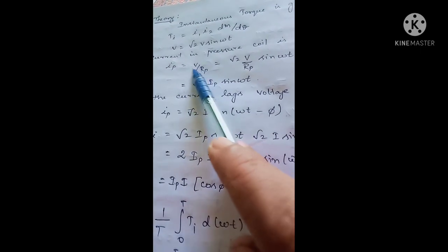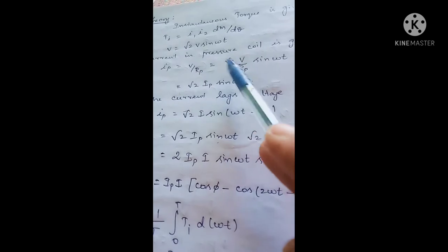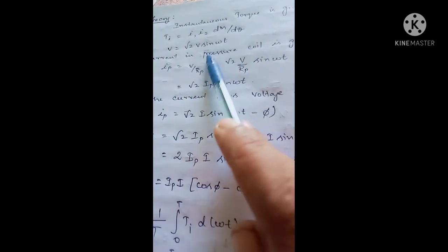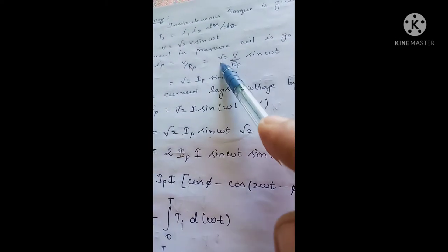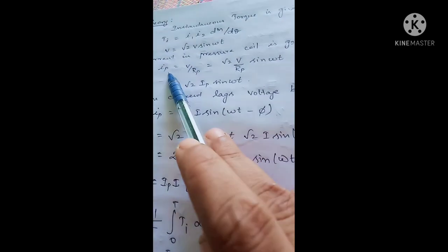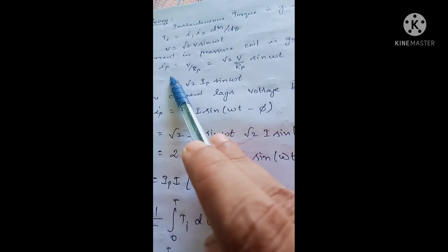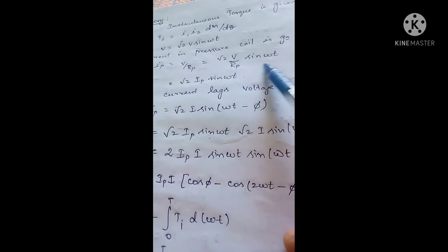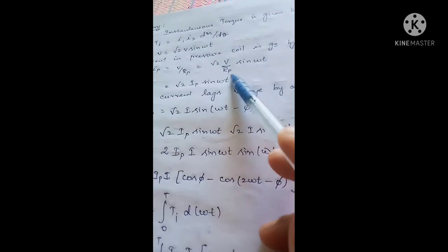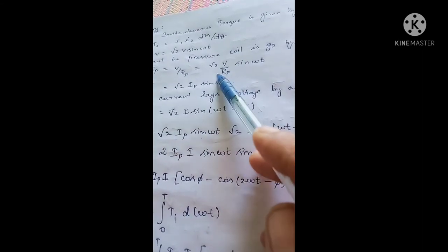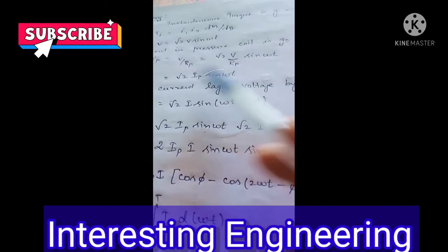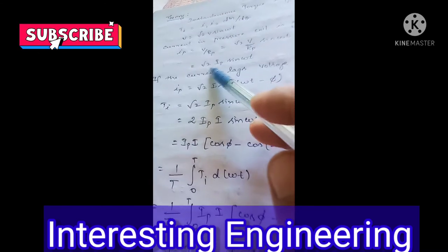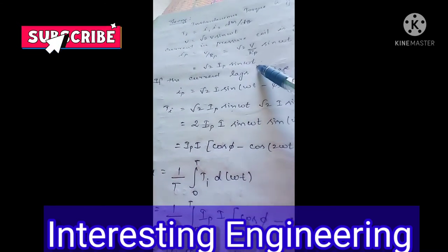Substituting v = √2 · V · sin(ωt), the current through the pressure coil becomes Ip = (√2 · V / Rp) · sin(ωt), which can be written as √2 · Ip · sin(ωt).